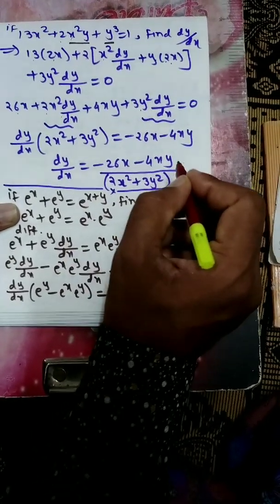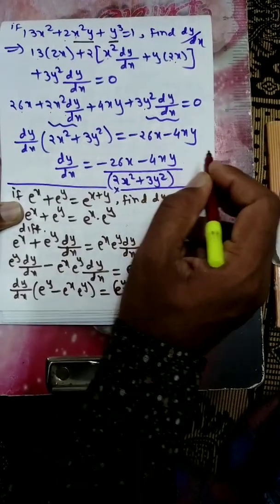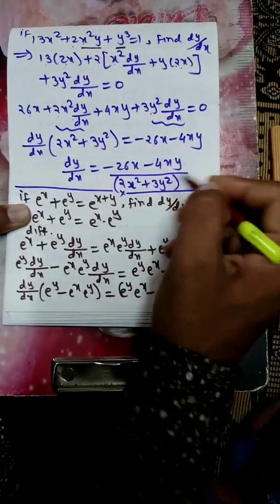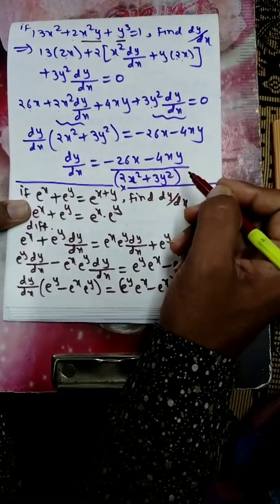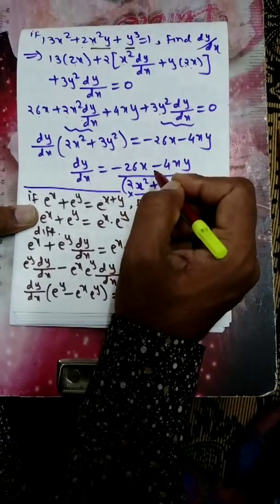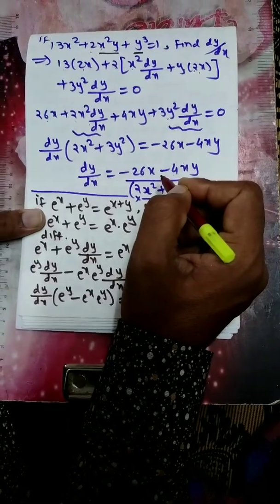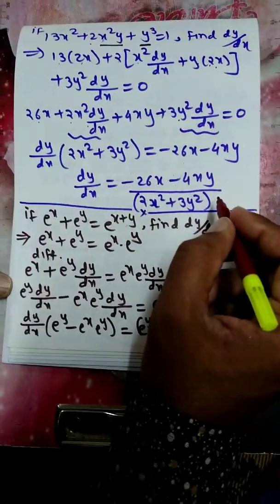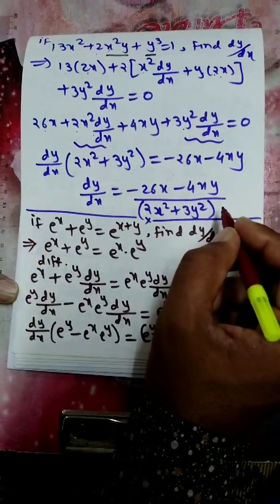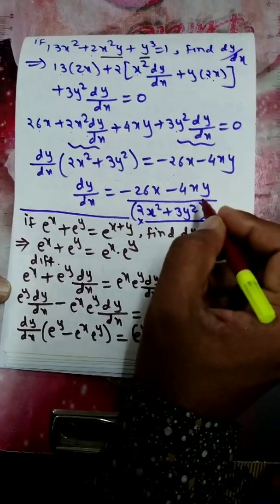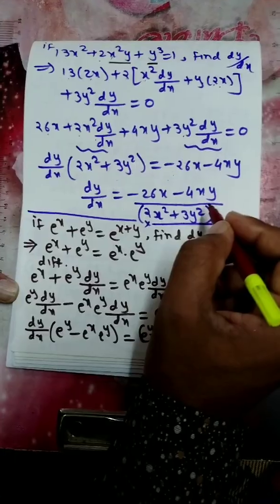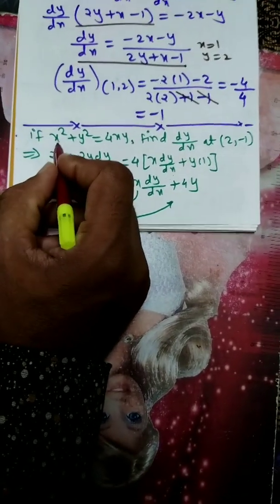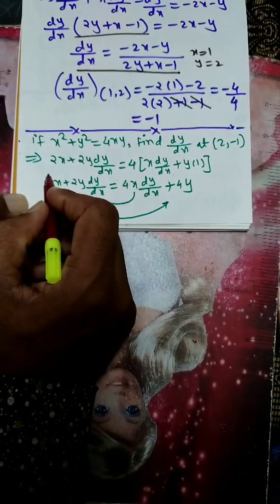The key rule is: whenever we take the derivative of y, we must multiply by dy/dx. And whenever there is a product of x and y, we apply the u·v rule. Let us now discuss one more example on implicit functions.